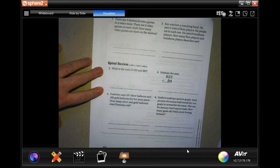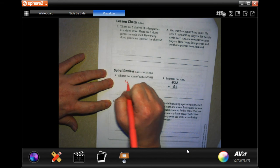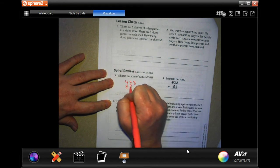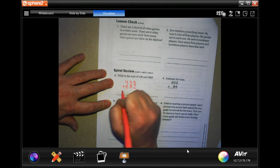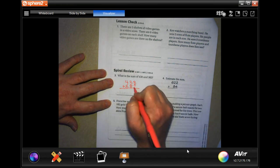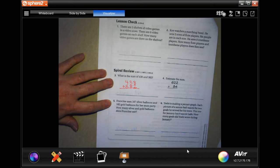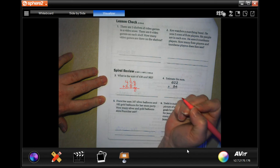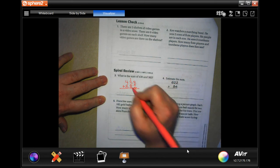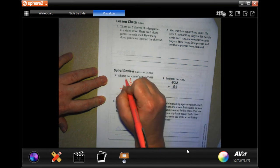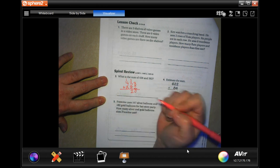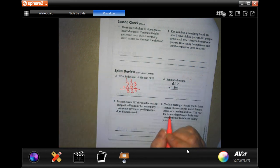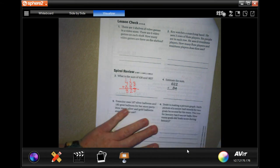What is the sum of 438 and 382? Well, sum means add. So, let's add. Eight plus two is 10. We're gonna carry that one. One plus three is four, plus eight is 12. Carry the one. One plus four is five, plus three more is eight. Eight hundred and twenty.